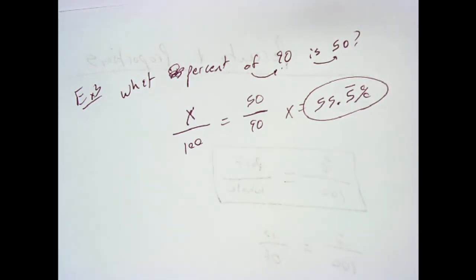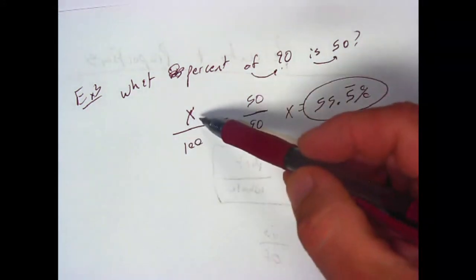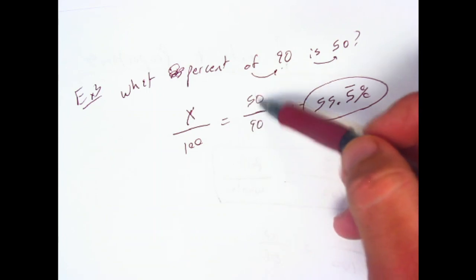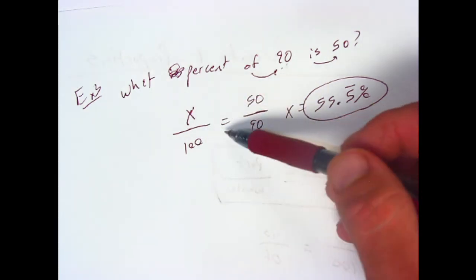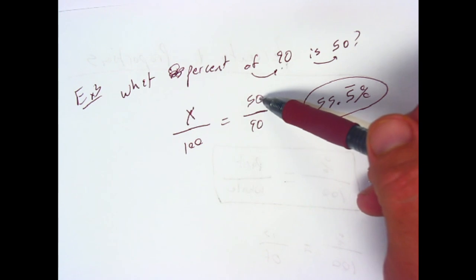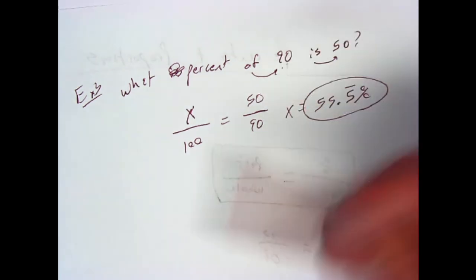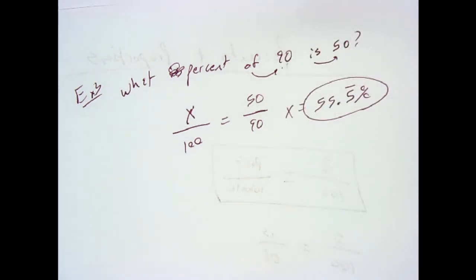That's all there is to it. All you have to remember is percent over 100 equals part over whole, or percent over 100 equals is over of. If you have any questions, let me know and I will get back to you as soon as I can. Until then, see you next time.